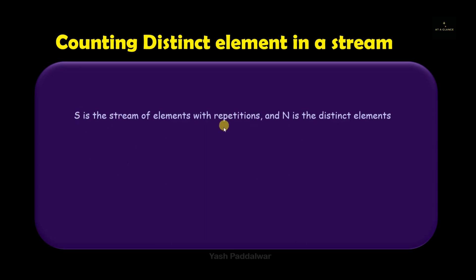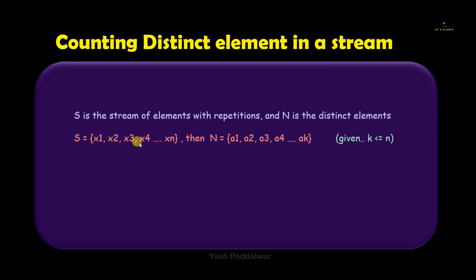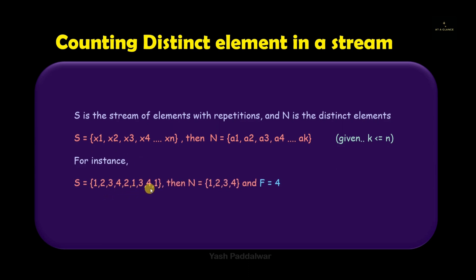Now let's see a proper scenario that will provide a clear idea of what exactly counting distinct elements in a given stream means. Let's say we have a stream S of certain elements which contains repetitions, and n is the total number of distinct elements present in it. Stream S contains elements x1, x2, x3, and so on till xn. And n stores the set of all the distinct elements, for example a1, a2, a3 and so on up to ak. The count of k will be strictly less than or equal to the count of n, because the total number of distinct elements will always be less than or equal to the total number of elements in the stream.